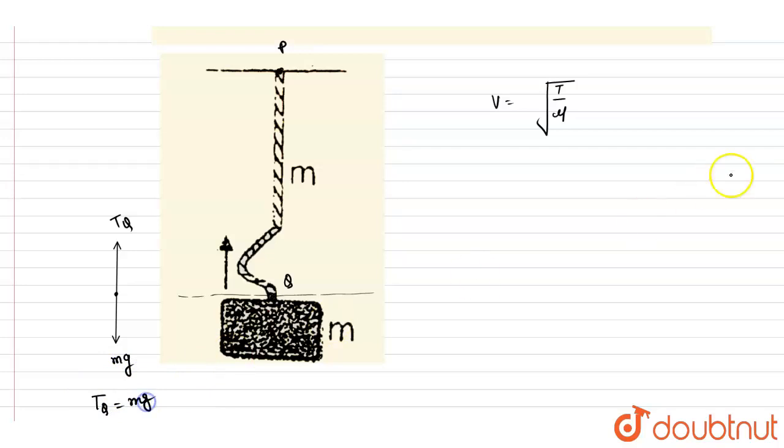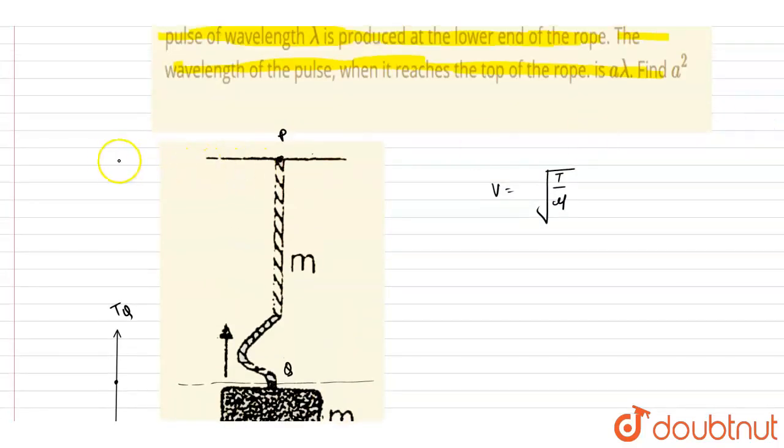To get the tension here, let's cut the string from here. The net weight that is below this point is 2mg, and the tension in upward direction is TP.